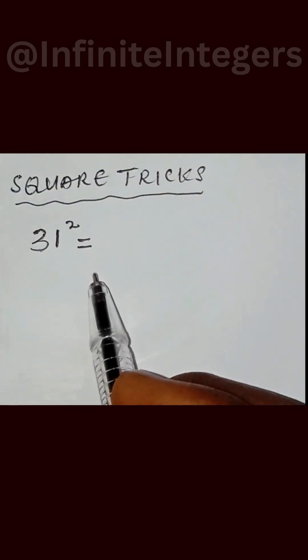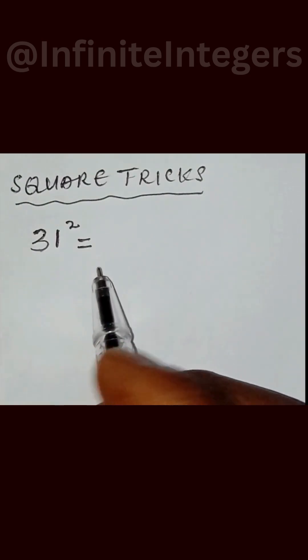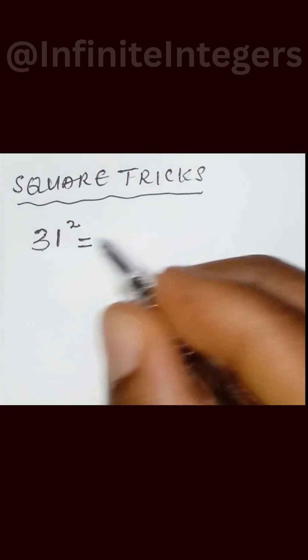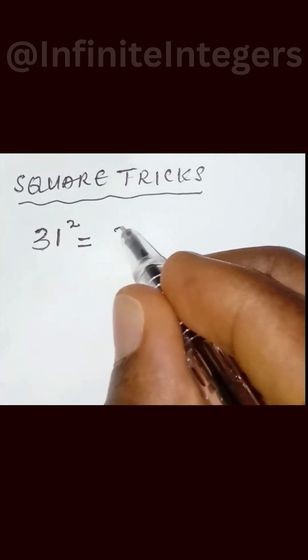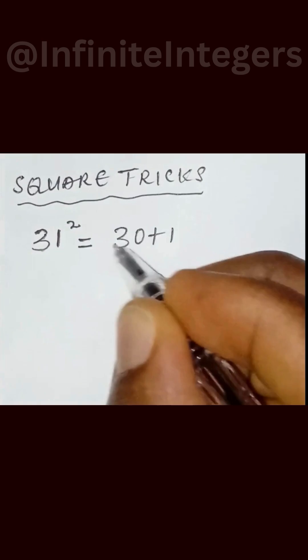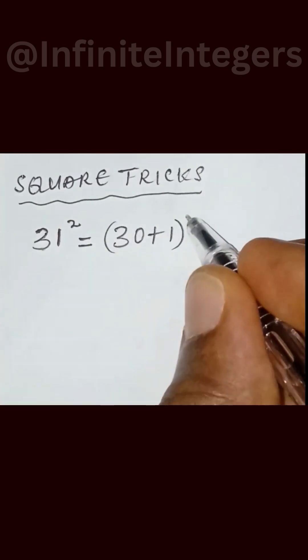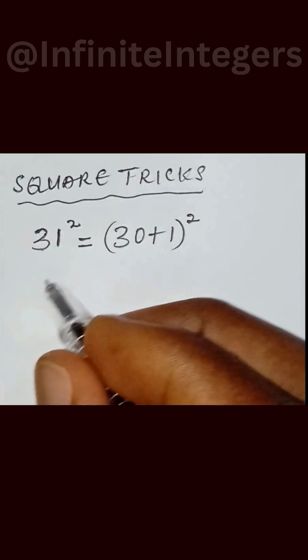These are the basic square tricks you need to acquire as a student, a must-know knowledge. What you need to do here is to split this as 30 plus 1, put them into brackets, then you apply this